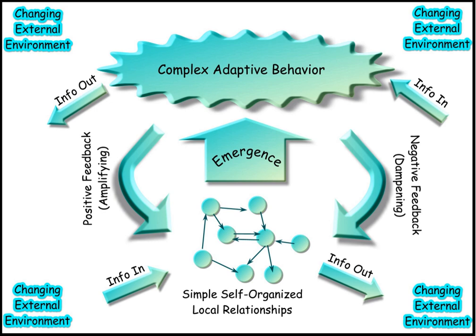Other notable definitions include: 'The science and art of the understanding of understanding' by Rodney E. Donaldson, the first president of the American Society for Cybernetics; 'A way of thinking about ways of thinking of which it is one' by Larry Richards; 'The art of interaction in dynamic networks' by Roy A. Scott; and 'The study of systems and processes that interact with themselves and produce themselves from themselves' by Louis Kaufman, president of the American Society for Cybernetics.